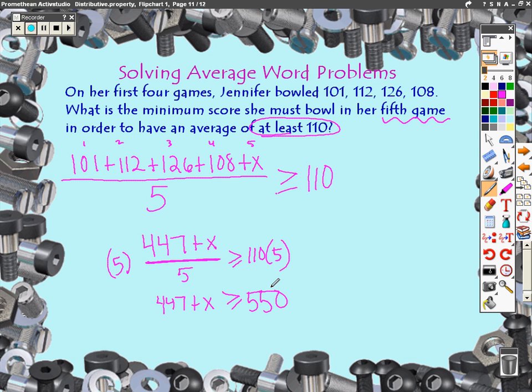Now all of you know how to do this. I have 447 plus x. I'm going to subtract 447. And my answer comes to 103. Everybody cool with that? Alright, that's one way to do it.